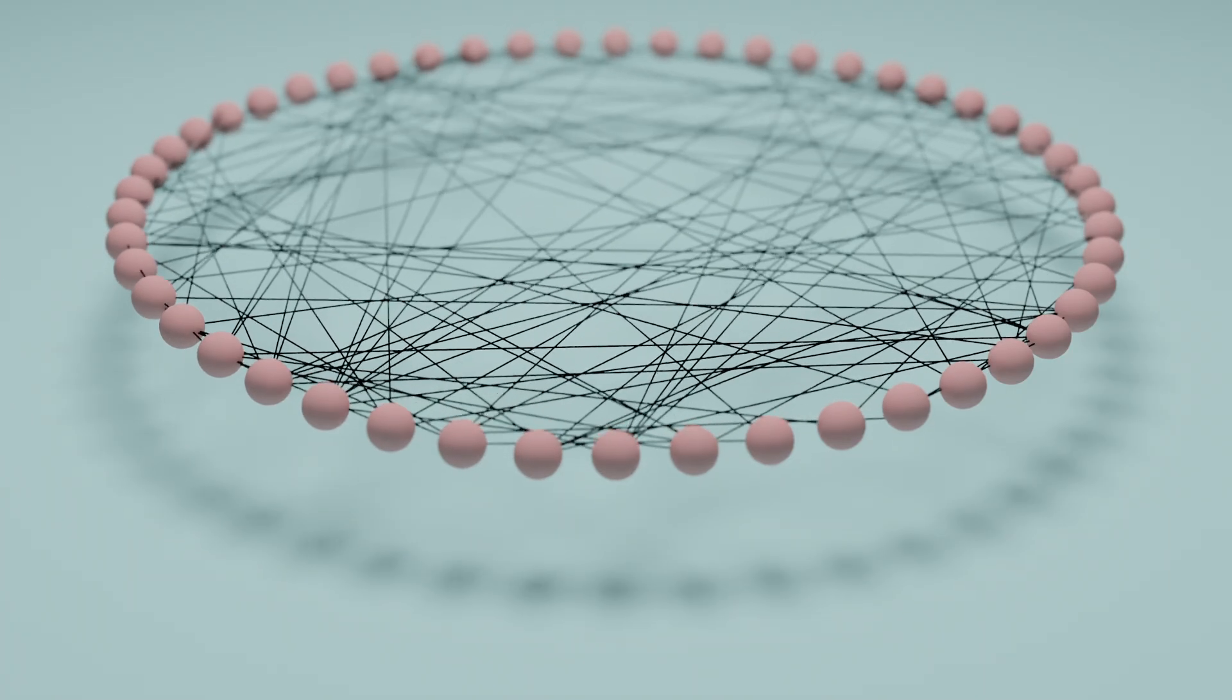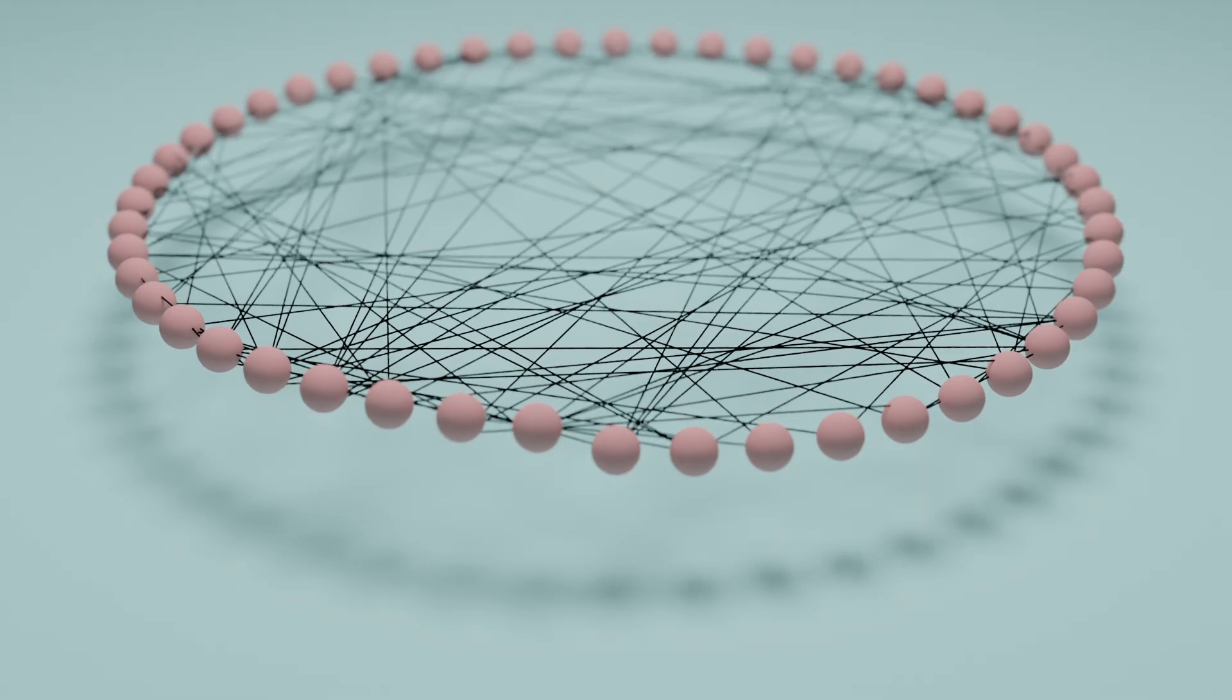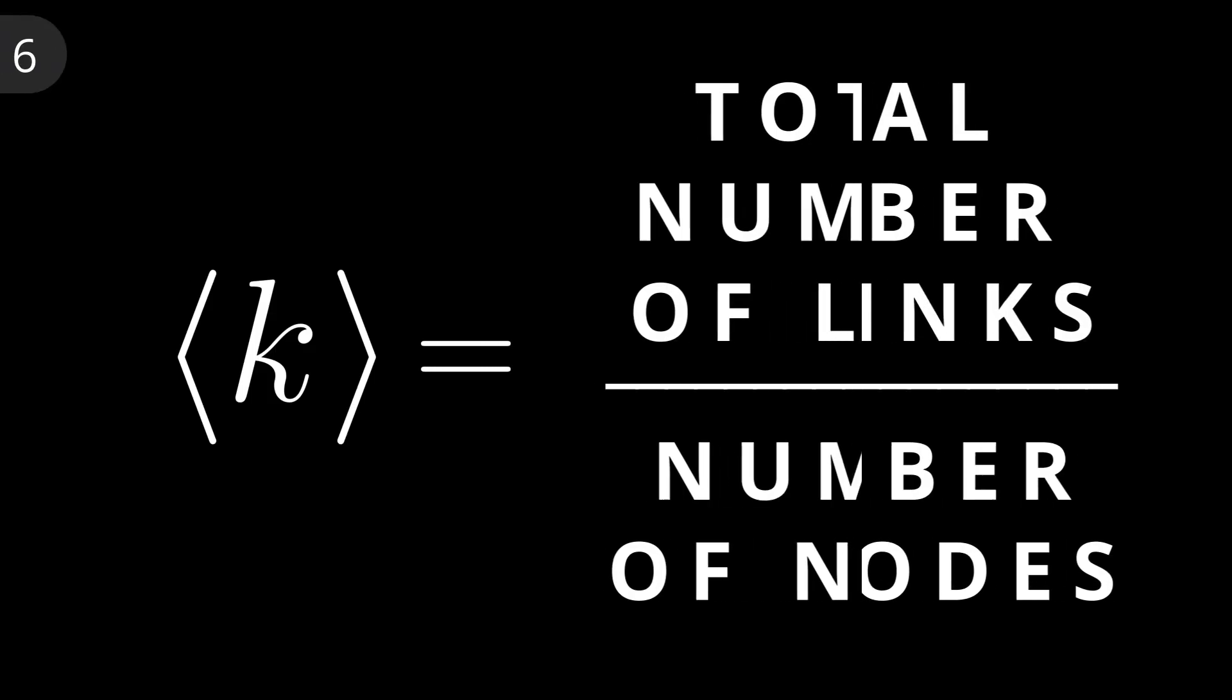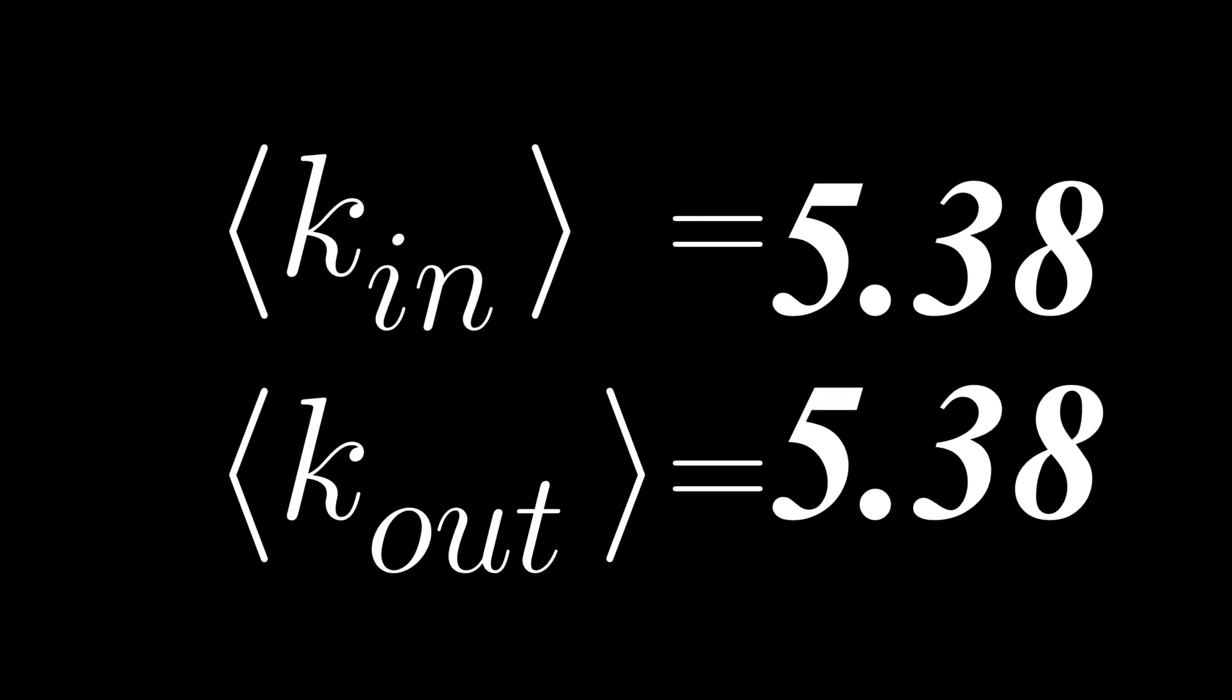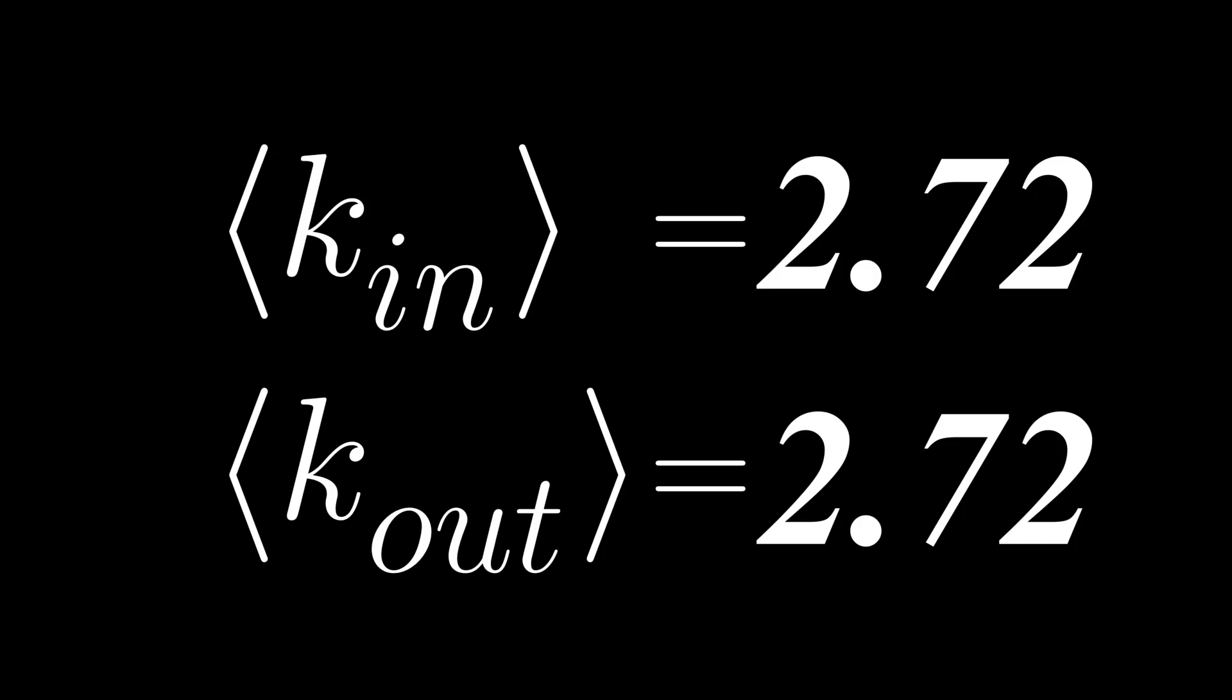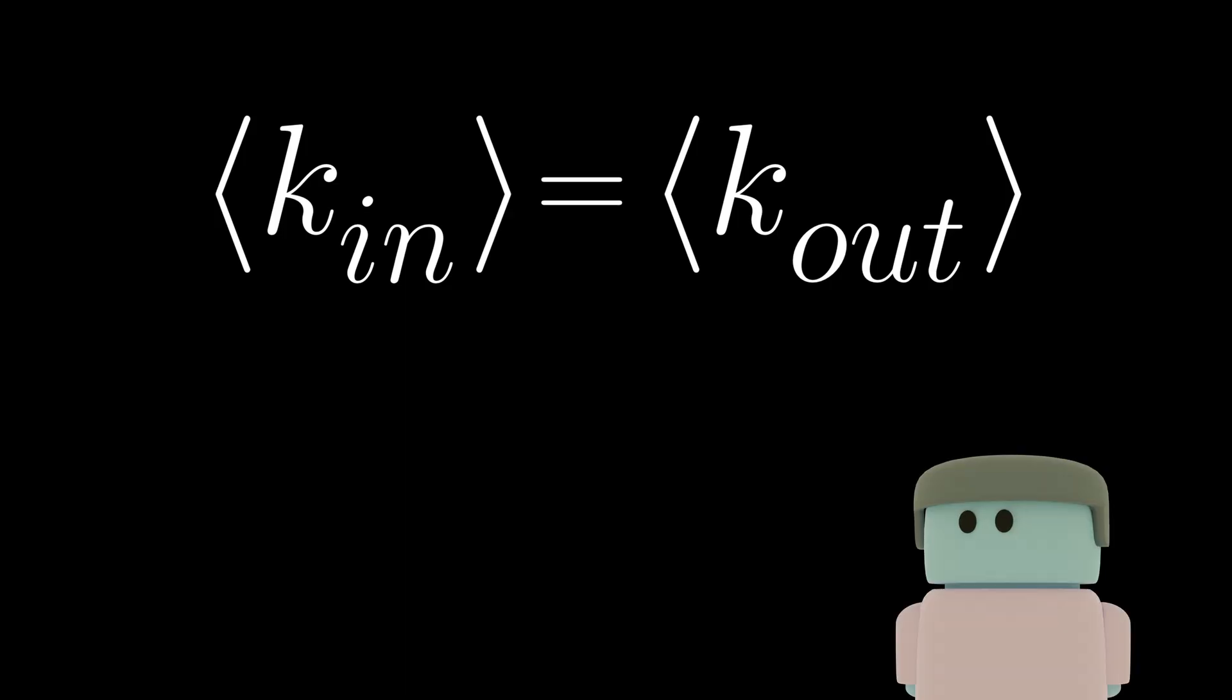For much larger networks, one would also be interested in averages of these degrees. So, the average non-directed degree, which is often indicated by these angle brackets with a K, is just the sum of all degrees divided by the number of elements. Likewise, we can do the same for the in and out degrees, and if you do, you'll notice that they're the same. This isn't just a coincidence, though, and will always be true. And I encourage you to think about why, intuitively speaking, this should be the case. In other words, why, on average, the number of in arrows would be equal to the number of out arrows.